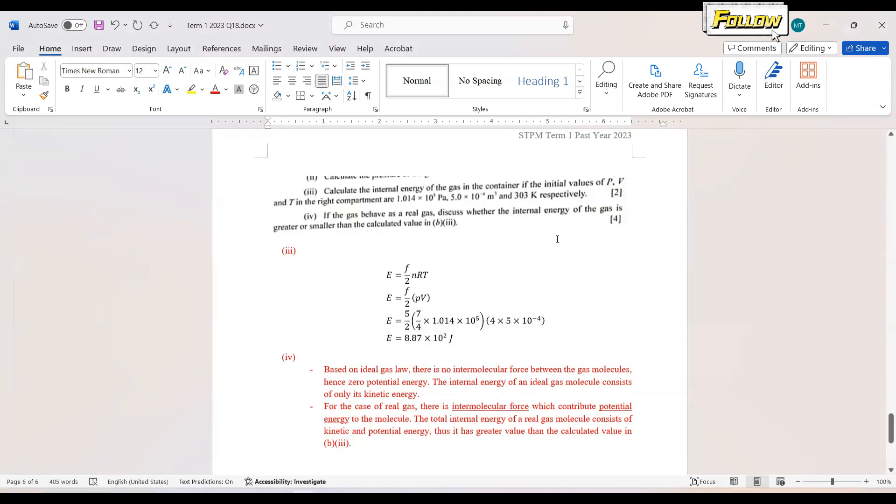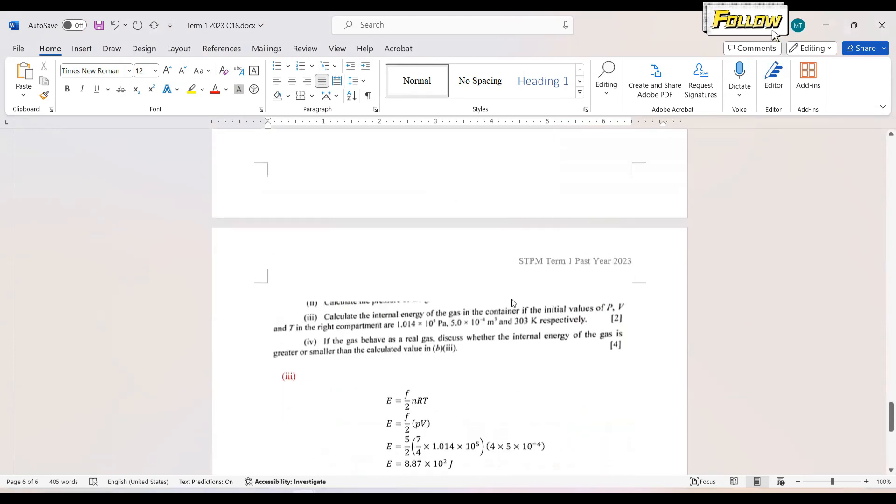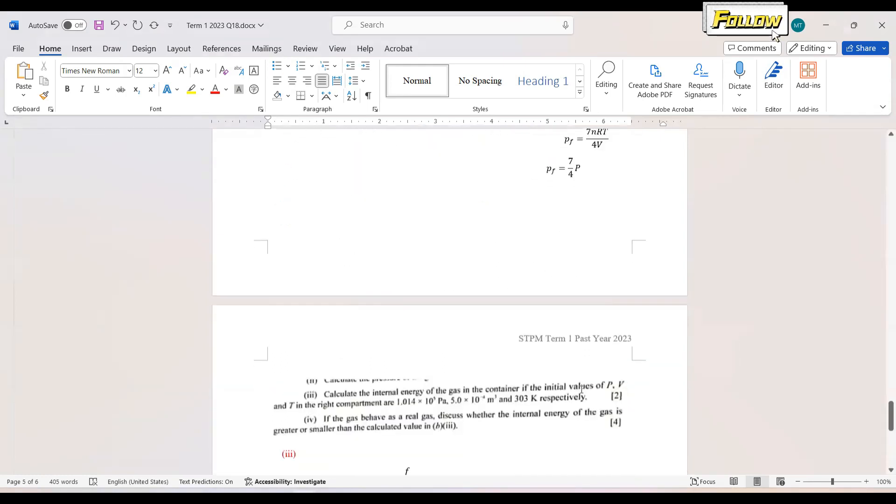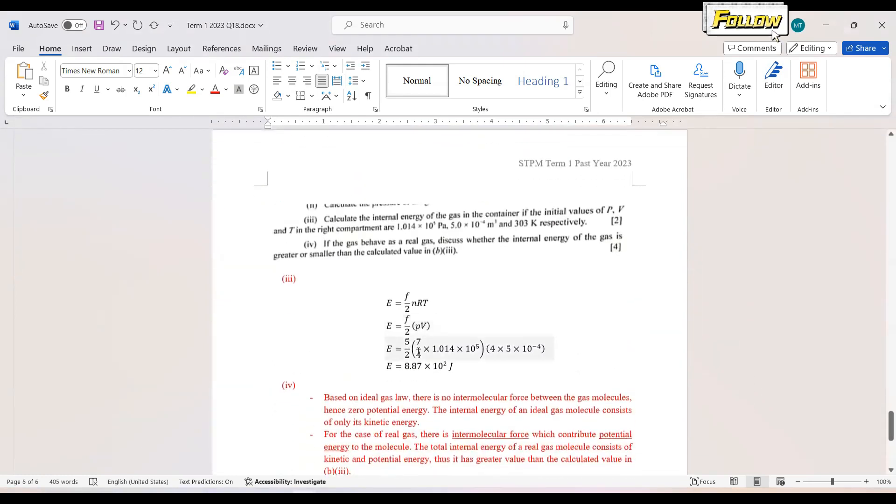Please take note that the P and V given here are the initial values of P and V in the right compartment. As discussed in the last question, the final pressure is 7 over 4 of the initial P and the volume is 4V. So we apply the pressure is 7 over 4 multiplied by the values given, and for the volume, we times 4.